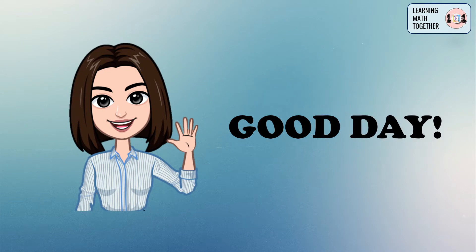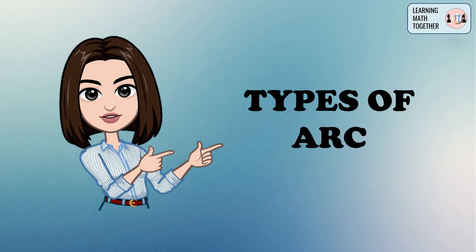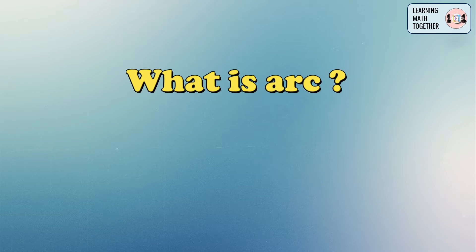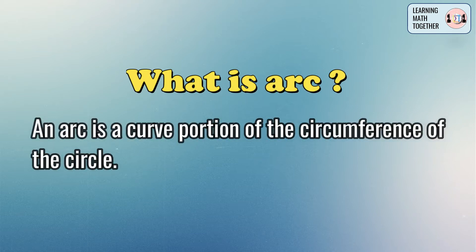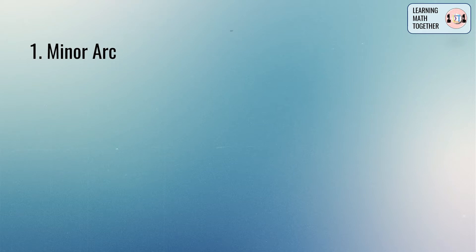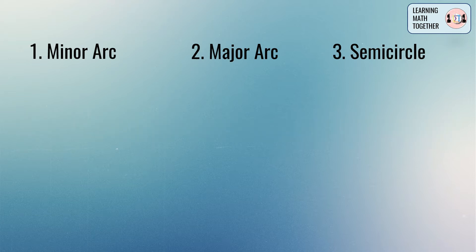Good day everyone! For today's video we will discuss the different types of arc. Before we discuss them, let me define first what an arc is. An arc is a curved portion of the circumference of a circle. There are three different types of arc: namely the minor arc, the major arc, and the semicircle.